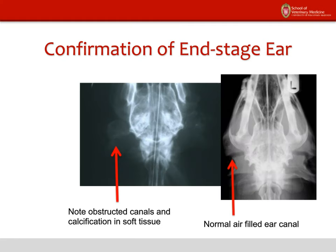Radiographic confirmation of end-stage ear disease shows: on a normal radiograph you see nice dark air-filled ear canals on both sides. On the abnormal side you don't see that, and instead you see dense white material — calcification — not as dense as skull but very similar. On plain film radiographs under general anesthesia with the dog on his back and ears pulled out, you may be able to see this without referring the dog further. This confirms end-stage ear disease, and the next step is getting the dog the medical and surgical treatment needed.